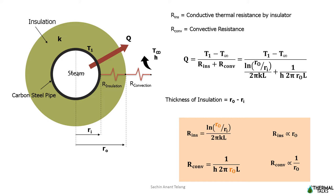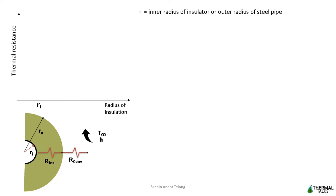If you carefully observe the thermal resistance equations, we can find a distinct relationship between the outer radius of insulation Ro and the thermal resistance offered by insulation and convection. As thickness of insulation increases, insulating resistance also increases. But on the contrary, increase in insulation thickness reduces convective resistance.